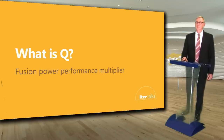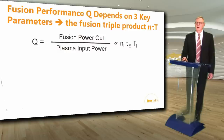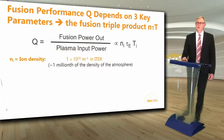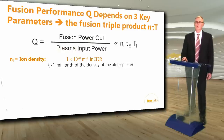What is Q? It is the fusion power performance multiplier. The fusion performance Q is a physics quantity that depends on multiplying three key parameters together known as the fusion triple product, N tau T. Q is the ratio of the fusion power out divided by the input power required to heat the plasma. Q is proportional to the fusion triple product NI times tau E times TI, where NI is the plasma ion density, which will be about 1×10²⁰ particles per cubic meter in ITER — about one millionth the density of the atmosphere.